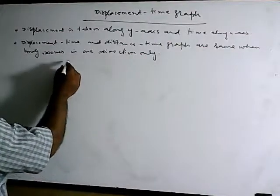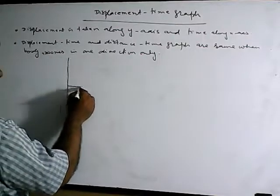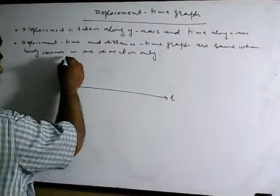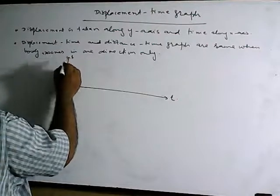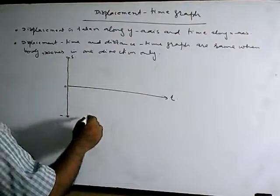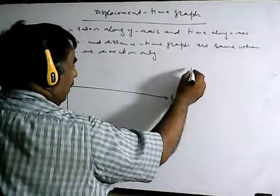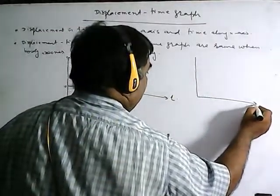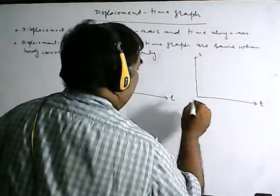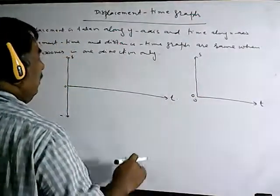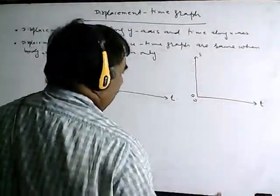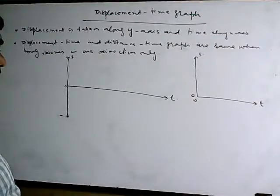For the displacement-time graph, time is always positive along the x-axis. Displacement can be positive or negative along the y-axis. If the displacement-time graph and distance-time graph are the same, they can both be represented by the same graph.